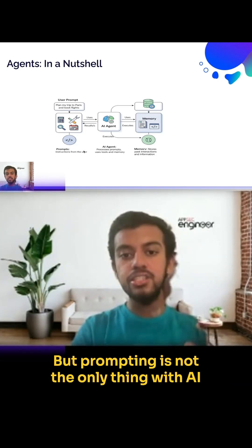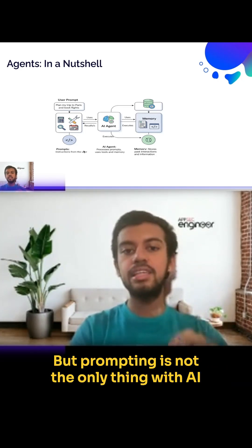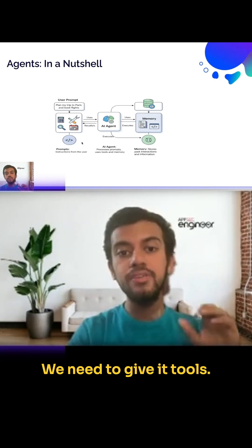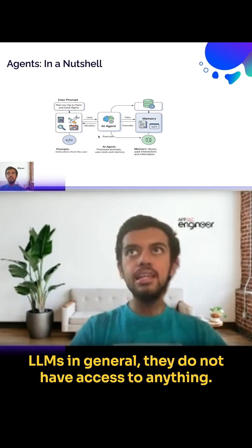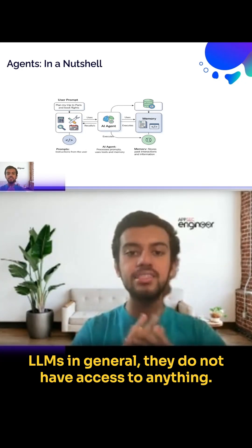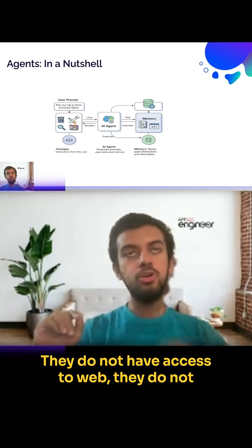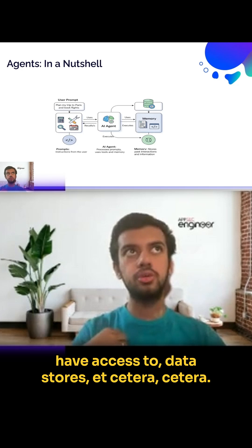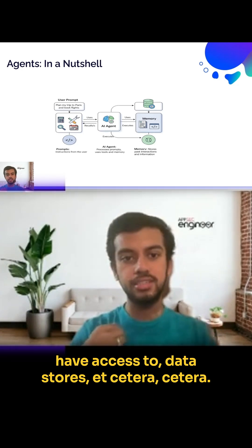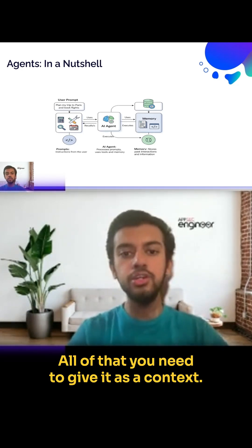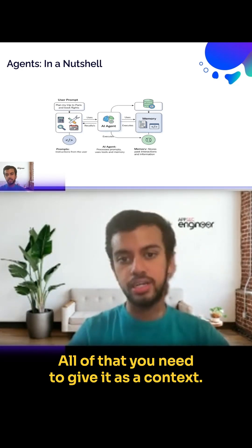But prompting is not the only thing with AI agents — we also need to give them tools. LLMs in general do not have access to anything. They do not have access to the web, they do not have access to data stores. All of that you need to give as context.